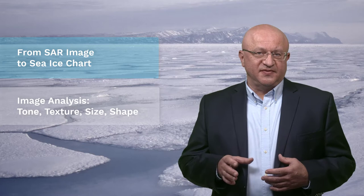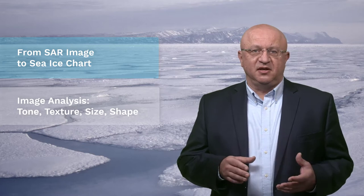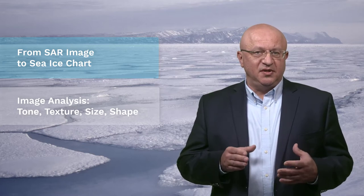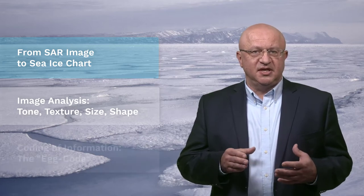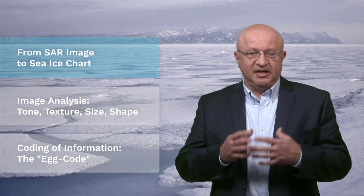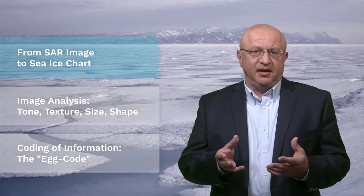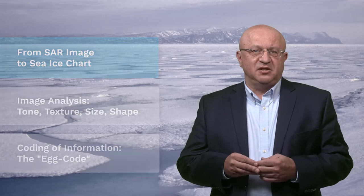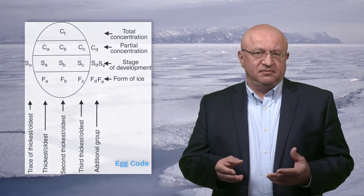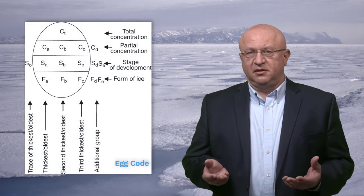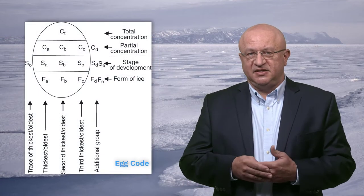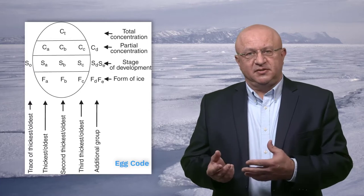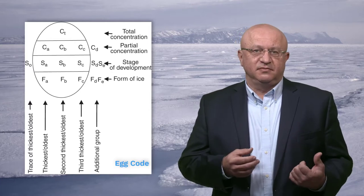The outline results are then transformed into an ice chart that consists of different regions, and each one of these regions is coded with an egg code because it's shaped like an egg. These egg codes contain information on the amount of ice — in other words, the concentration of the different ice types in each region — as well as the form of the ice, usually the size of the floes.